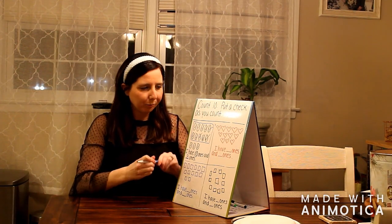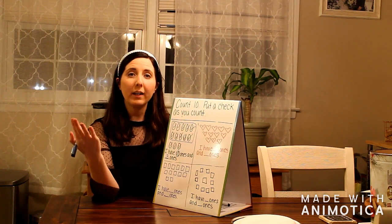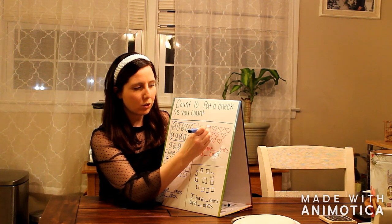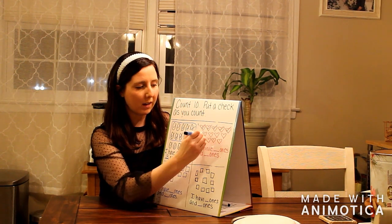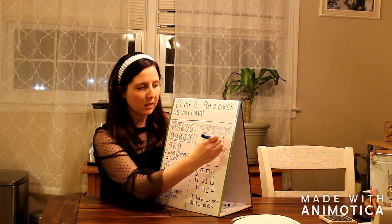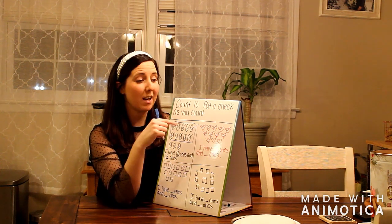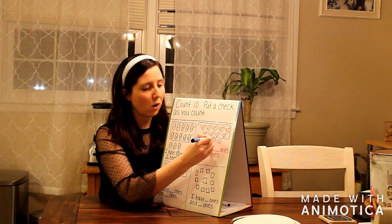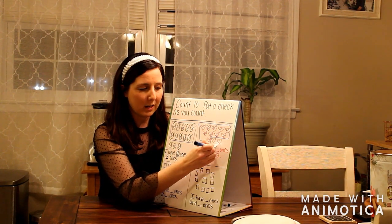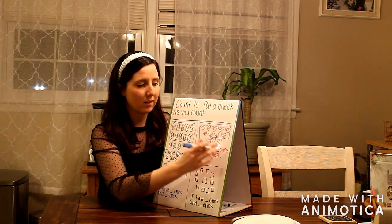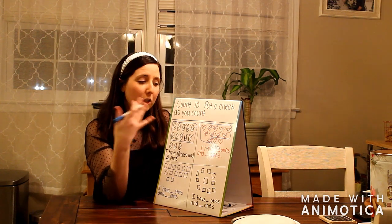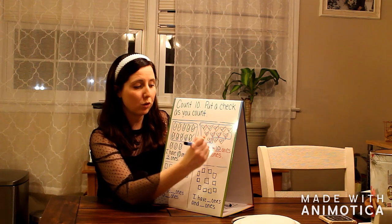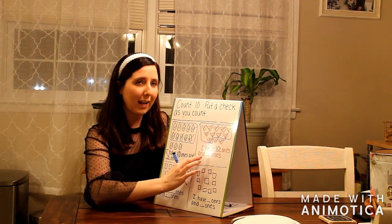Our next problem is over here with our hearts. Again, I want to use my checks to make sure that I've counted all of my hearts and I don't leave any of them out. Let's get started. One, two, three, four, five, six, seven, eight, nine, ten. And I need to stop right there because when I get a group of ten, I need to circle it — that's going to remind me that I've already counted ten ones. I'm going to put my ten on the line because I have ten ones. I can't stop counting there because not all of my hearts have checks on them. One, two. So how many ones do we have left over? We have two ones. So I have ten ones and two ones.